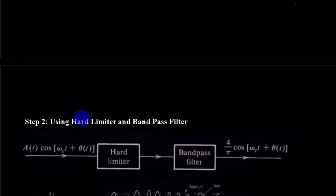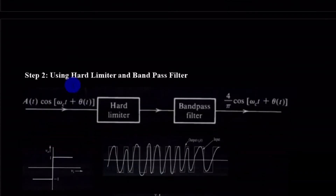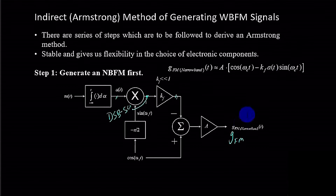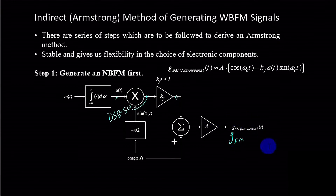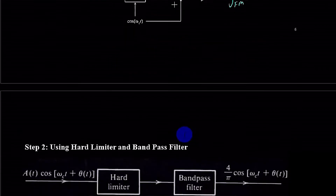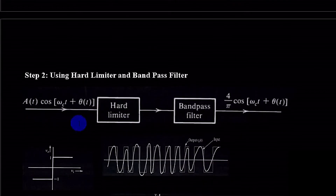In the second step we introduce a hard limiter and a band pass filter. The output of a narrowband modulator is fed into a hard limiter — and the rationale is: why do we need a hard limiter?